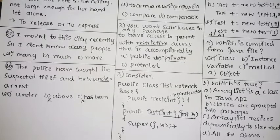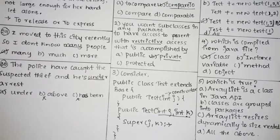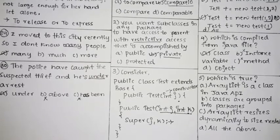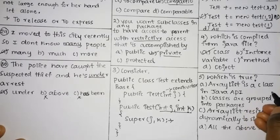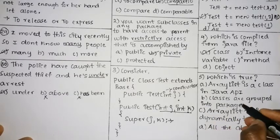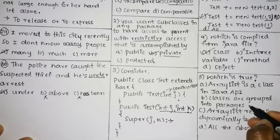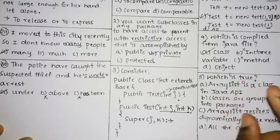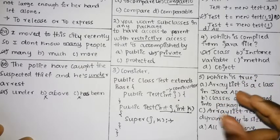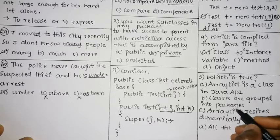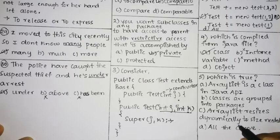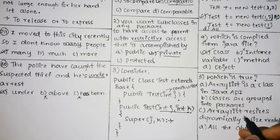The last question in this video: which of the following is true, regarding ArrayList? First, ArrayList is a class in the Java API — that is correct. Second, classes are grouped into packages so they are easily accessible and to avoid name conflicts when two classes share the same name. Third, ArrayList resizes dynamically as needed.